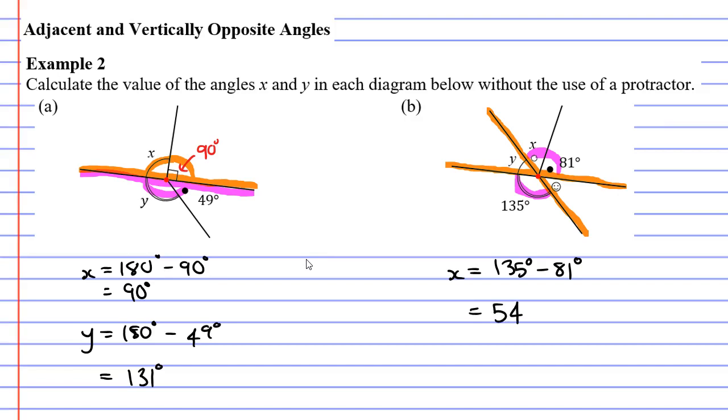So now we've found X. Sometimes with questions like these, it helps to write that down. 54 degrees like so. Now we need to find angle Y.